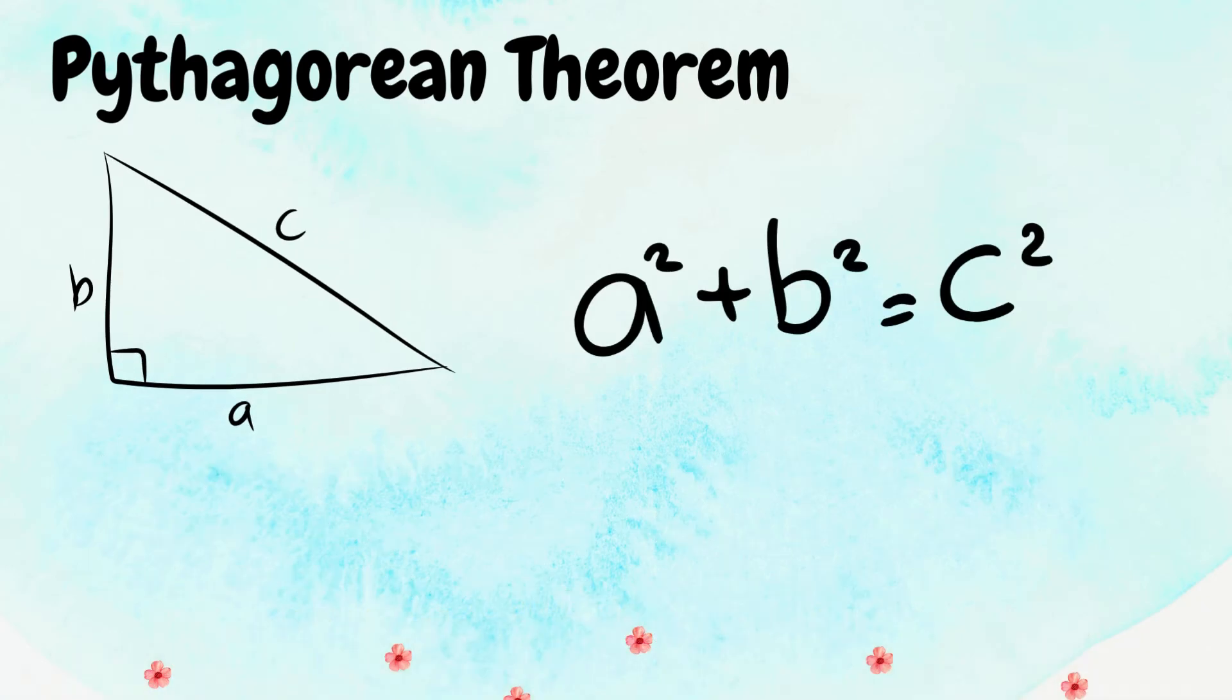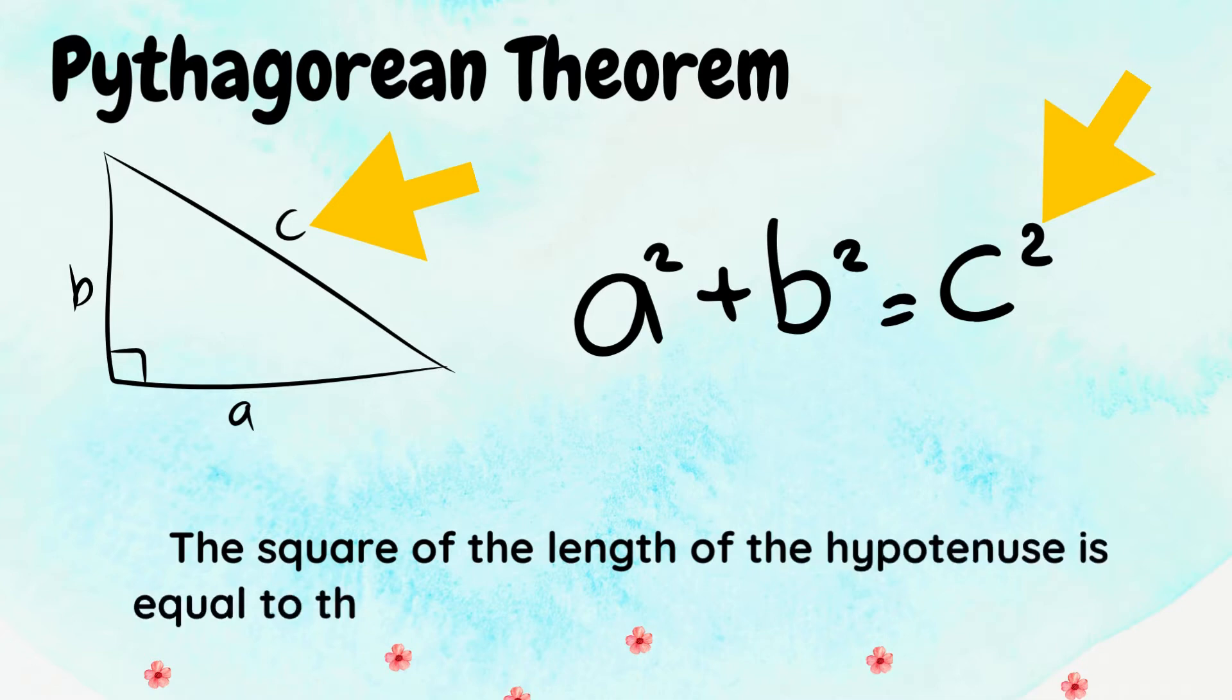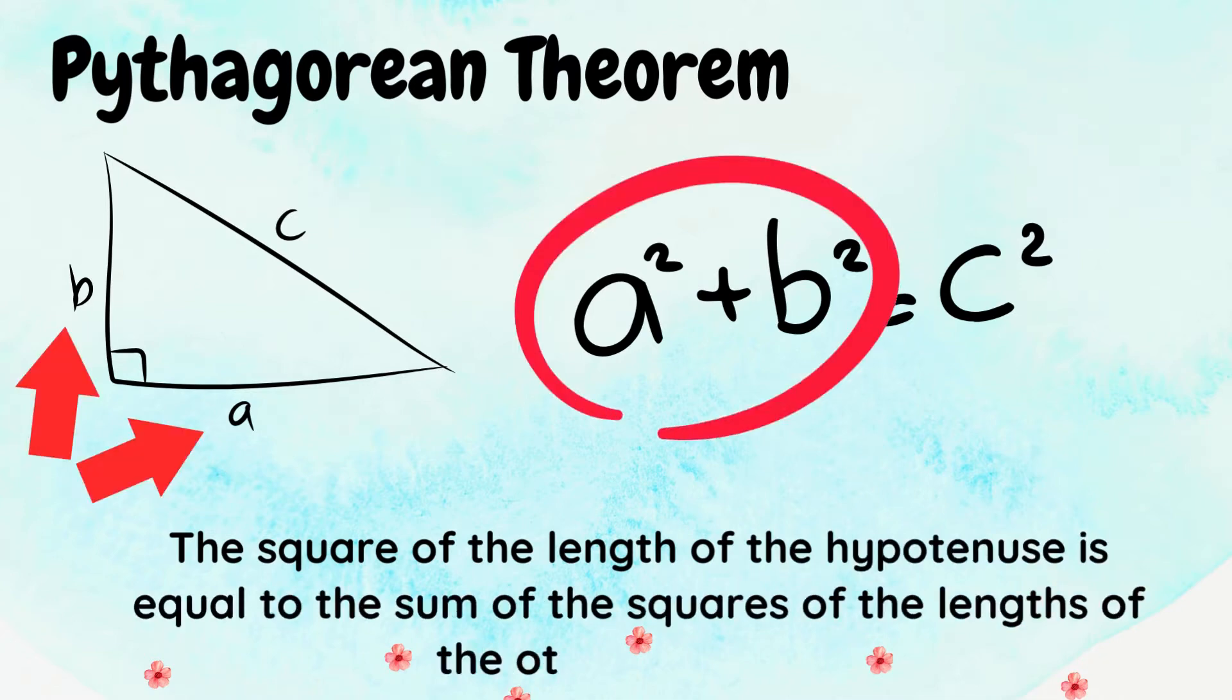The Pythagorean Theorem states that, in a right-angled triangle, the square of the length of the hypotenuse is equal to the sum of the squares of the lengths of the other two sides.